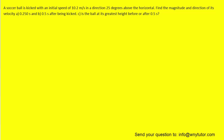Our first step would be to draw a simple picture that represents the given information. So the red vector represents the initial velocity of the soccer ball, which is 10.2 meters per second, and it's kicked at an angle of 25 degrees above the horizontal.